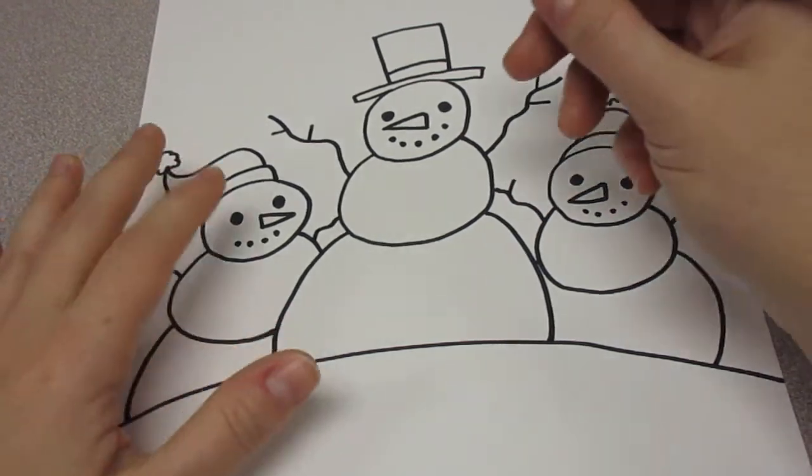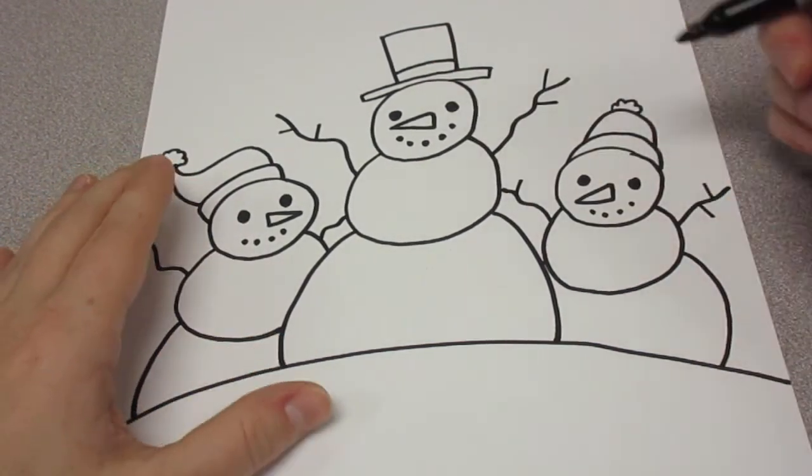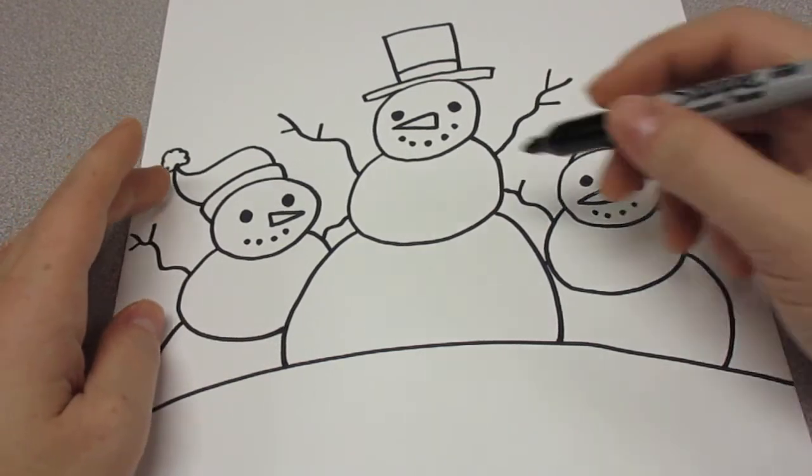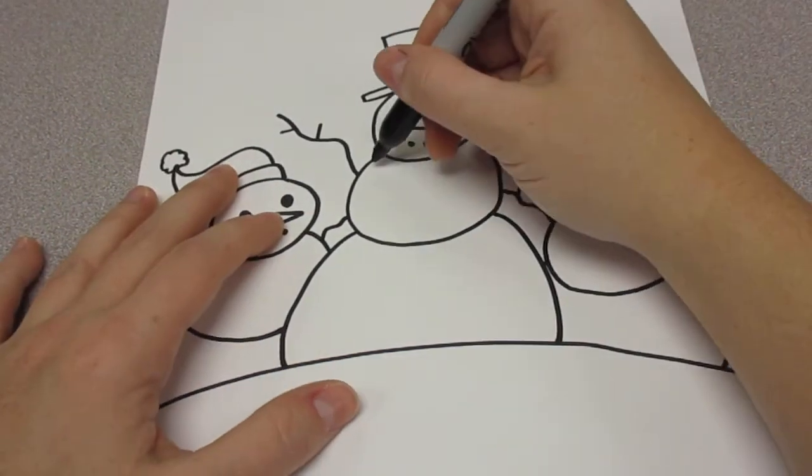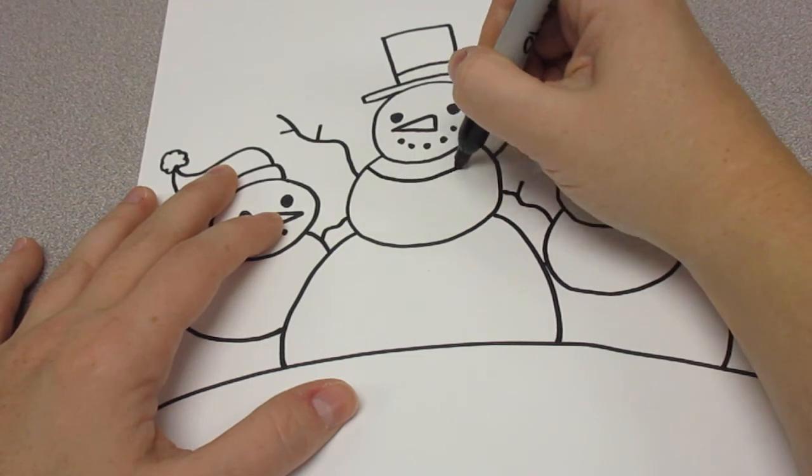Okay, I'm going to add one more decoration. I'm going to put a scarf on this guy and buttons on one of these guys. So, make a curve under his head.